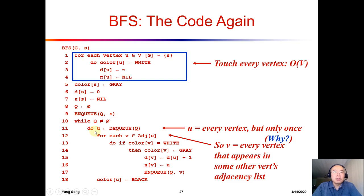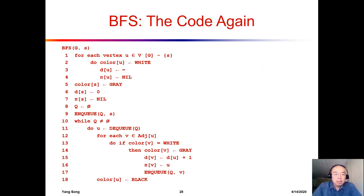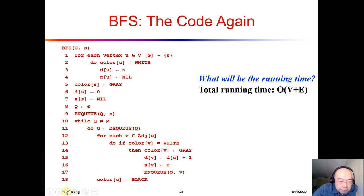So let me repeat. So for the u, the total number of the u we are going to visit will be the total number of the vertices. And the total number of the v we are going to visit will be the total number of the edges. Okay? So what will be the running time then? If we consider the first four lines of code, and then that is O(V), and we have already discussed it.